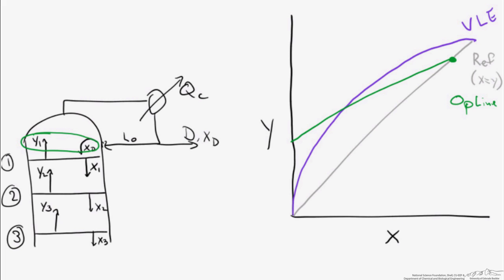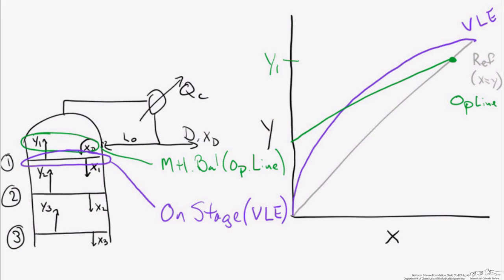We know from material balances that the composition x sub D of this liquid stream needs to be balanced with the composition of the vapor stream leaving the first stage. The relationship that relates those two is the operating line. So if we find the point corresponding to x sub D on the operating line, that's going to tell us the composition of our vapor stream leaving that first stage. When we reach that first stage, the compositions need to be dictated by vapor-liquid equilibrium. So we read the composition based on the VLE line at vapor composition Y1, and that gives us the liquid leaving that first stage.